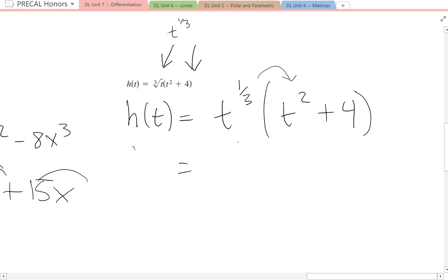t to the one-third times t to the two. When you multiply the same base, you add the exponents. One-third plus two is the same as one-third plus six-thirds, which is seven-thirds.